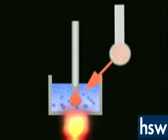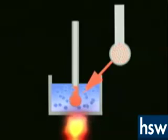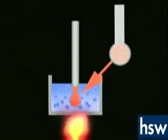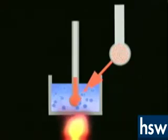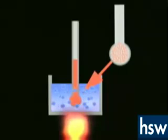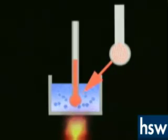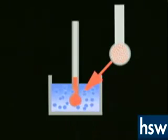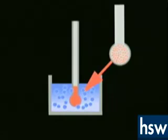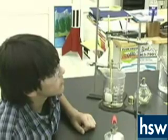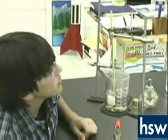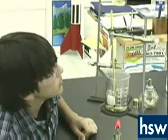When the thermometer touches the object, the motion of the object's molecules is transferred to the molecules of the thermometer fluid. The fluid then either expands because the molecules are moving faster, or contracts because the molecules are moving slower than before. When the fluid expands, it moves up the thermometer and registers a high temperature.